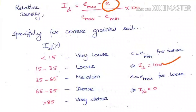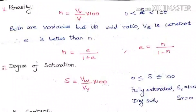For a loose soil, the voids will be more and void ratio will be more, which may be equal to E_max. So E_max minus E_max in the numerator becomes 0, giving ID = 0, indicating a very loose soil. Based on the ID value we can judge what type of soil is present.